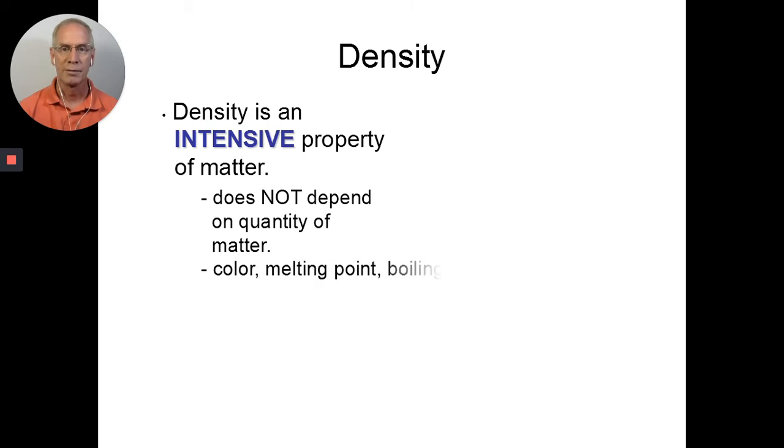Some examples of intensive properties are color, melting point, boiling point, odor, or density. You can imagine, you can pick a substance, whatever it is that you want, water, or a candy bar, or anything else. The color is the same if you have a little piece of the candy bar or the whole candy bar. The melting point is the same, the boiling point, the odor, the density. These things do not change with sample size.